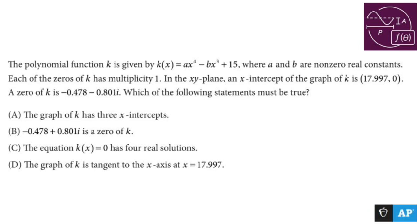Each of the zeros have a multiplicity of one. Interesting, which seems weird given the fact that we have x to the fourth, x to the third plus 15, but I kind of know what's going to happen. In the xy plane, an x-intercept of the graph of k is that.